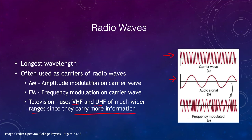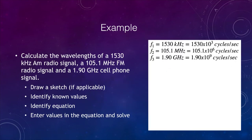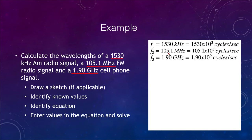Let's look at an example of what we might calculate. We want to find the wavelengths of an AM signal at 1,530 kilohertz, an FM signal at 105.1 megahertz, and a cell phone signal at 1.9 gigahertz. Remember: kilo means a thousand, mega means a million, and giga means a billion. So frequency one is 1,530 times 10 to the third hertz. The second is 105.1 times 10 to the sixth. And finally, 1.9 gigahertz is 1.9 times 10 to the ninth cycles per second.